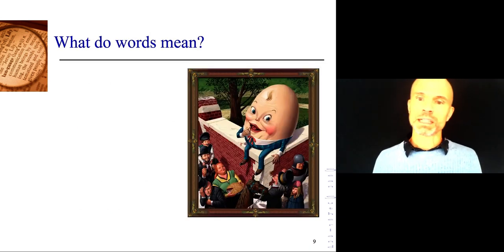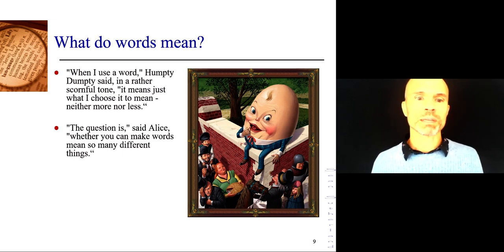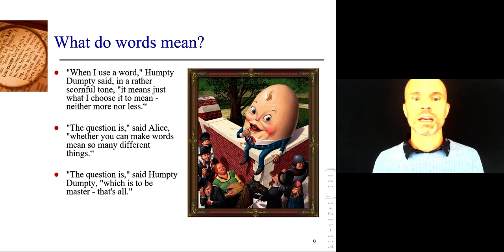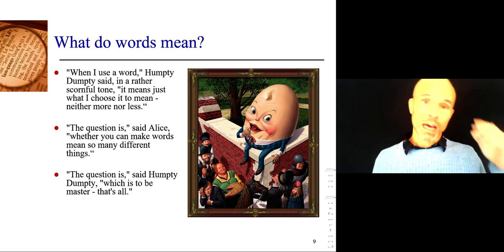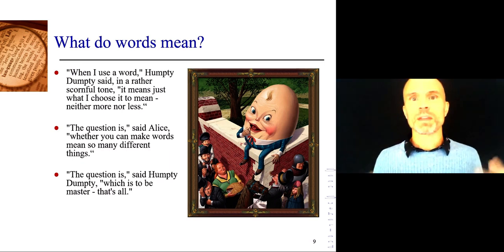So, as you see here, Humpty Dumpty from Alice in Wonderland, Humpty Dumpty has this thing that he said at one point, when I use a word, Humpty Dumpty said in a rather scornful tone, it means just what I choose it to mean, neither more nor less. Alice replies, the question is whether you can make words mean so many different things. The question is, said Humpty Dumpty, which is to be master? That's all. Linguists agree with Humpty, Mr. Dumpty here.